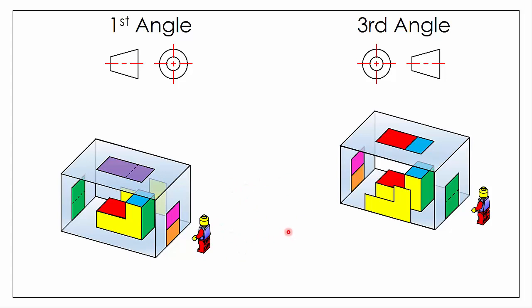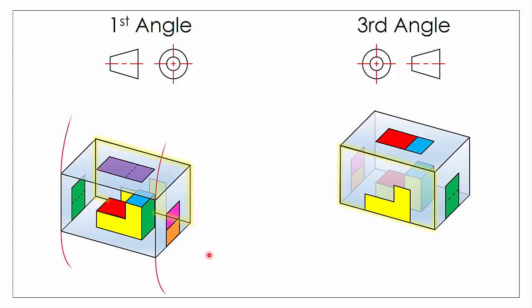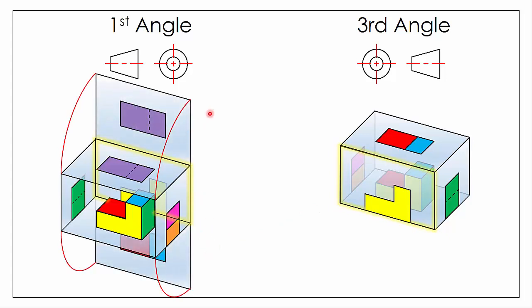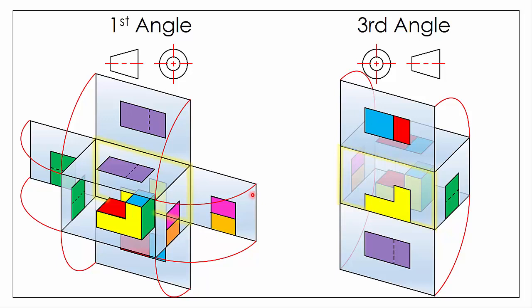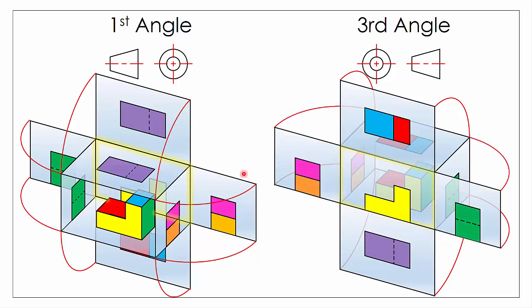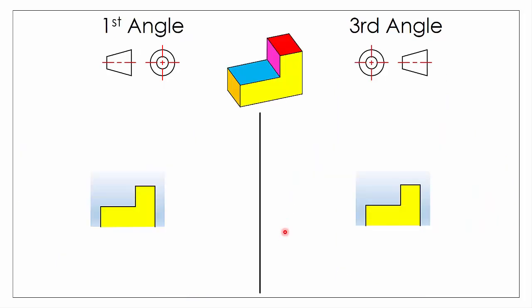There is one other difference when it comes to first and third angle: how we hinge out our object. In both cases we hinge from the front elevation, but in first angle the front elevation is behind the object, whereas in third angle the front elevation is in front of the object. So for first angle we hinge the object flat and backwards onto our front elevation, whereas in third angle we hinge it towards ourselves. The same applies with end views — hinging back in first angle and forwards in third angle. That's where the difference in orientation of views comes from.